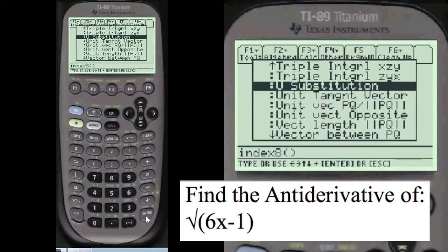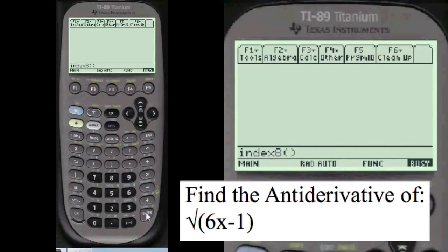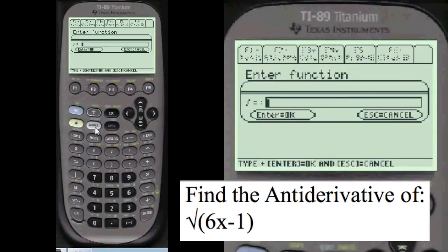U-substitution. I'm going to enter our function. You have to press alpha before you enter anything into these entry lines here. Don't forget that alpha. And the square root, second square root of 6 times x minus 1.